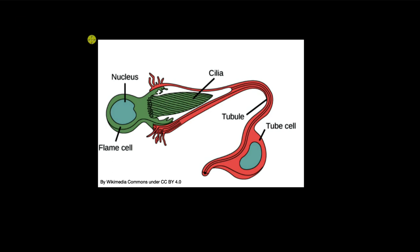And what the cilia do is when they beat they draw in water and solutes inside the flame cell. And that water with solutes passes through this tube which has the tube cell and finally goes out into the exterior.